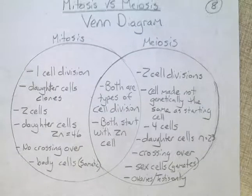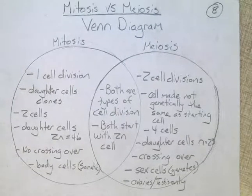Here we have our Venn diagram — this will be page 8 in your notes. Go ahead and copy this down and pause the podcast at this time.